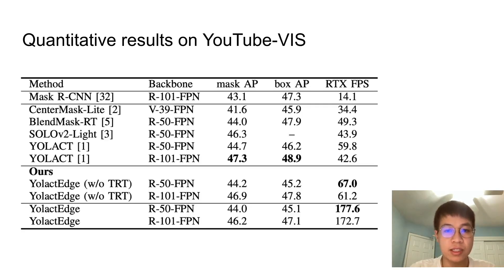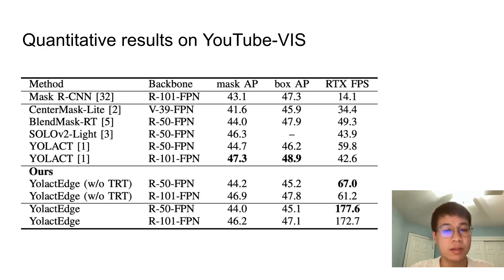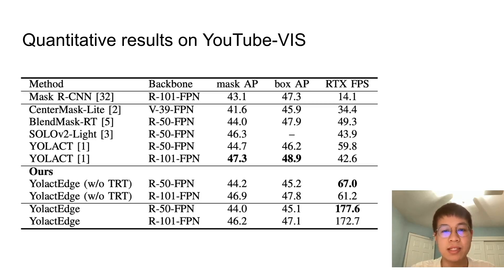We first compare YOLACT Edge to state-of-the-art real-time methods on the YouTubeVIS dataset using the RTX 2080 Ti GPU. YOLACT with the ResNet-101 backbone produces the highest box detection and instance segmentation accuracy over all competing methods. Our approach, YOLACT Edge, offers competitive accuracy to YOLACT while running at a much faster speed. Even without TensorRT optimization, it still achieves over 60 FPS for both ResNet-50 and ResNet-101 backbones, demonstrating the contribution of our partial feature transform design which allows the model to skip a large amount of redundant computation in videos.